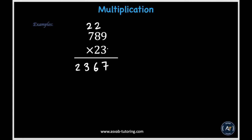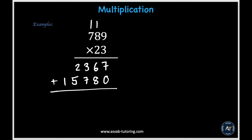Now we're done with the ones place, so we can put a 0 under the 7 because now we're moving on to the tens digit. I recommend erasing all the carried numbers at the top to avoid confusion. Now we're multiplying 2 times 9 to get 18. We put down the 8 and carry over the 1, then multiply 2 times 8 to get 16, and adding 1 gives us 17. We put down the 7 and carry over the 1, then multiply 2 times 7 to get 14, and 14 plus 1 gives us 15.